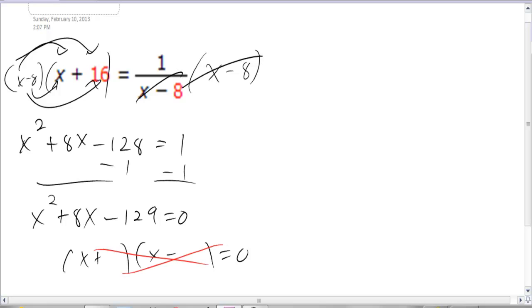Which would just be x equals negative b plus or minus the square root of b squared minus 4ac all divided by 2a. So in this problem our a is 1, our b is 8, our c is negative 129. You sub all of them in and it'll give you your two answers.